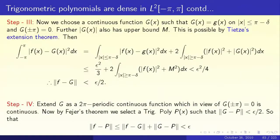That is Step 2. In Step 3 we select a continuous function capital G(x) such that capital G(x) equals little g(x) for mod x less than or equal to pi minus delta — on this large subinterval the two agree. At the endpoints plus pi and minus pi we fix capital G to be 0. We now have a continuous function defined on a closed subset of minus pi to pi, and by Tietze's extension theorem, capital G extends as a continuous function on all of minus pi to pi with the same upper bound M.